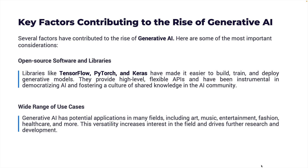Another important factor is the rise of open source software and libraries. Frameworks such as TensorFlow, PyTorch, and Keras have made it possible to build, train, and deploy generative models, providing high-level flexible APIs and democratizing AI by fostering a culture of shared knowledge within the AI community. Today, open source technologies and open models are accelerating Generative AI significantly by making it more accessible and enabling adoption across a wide range of use cases. This versatility — infusing Gen AI into a variety of applications — has created a lot of momentum.